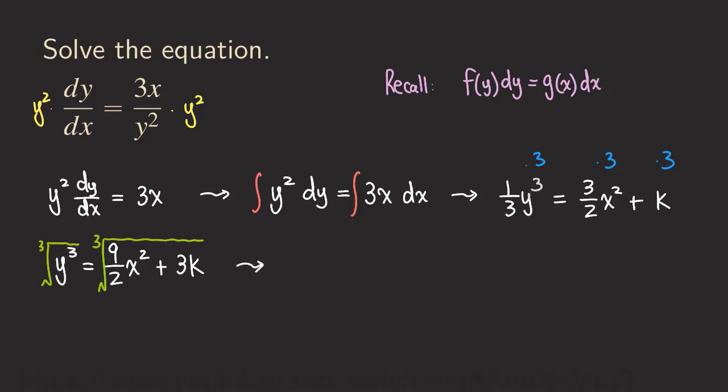And we're going to get y equals, and what do we have here? We get (9/2 x² + 3k) raised to the one-third power. And we're finished because we have y isolated here.